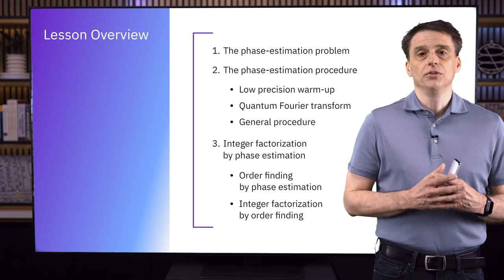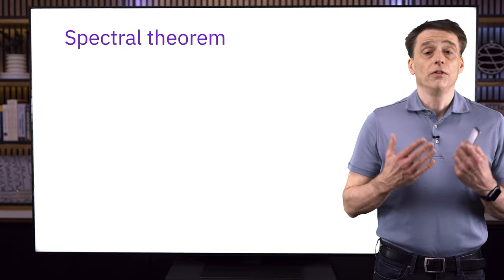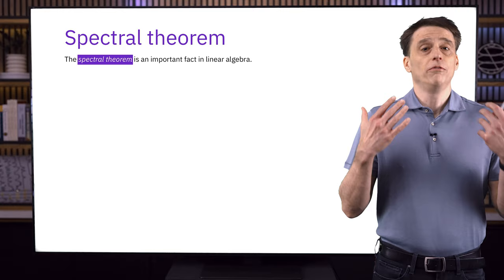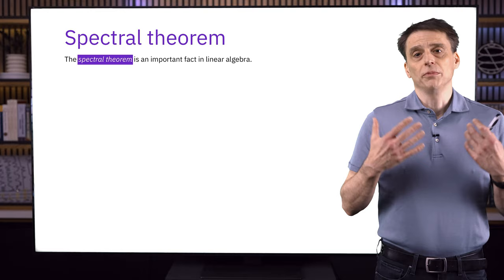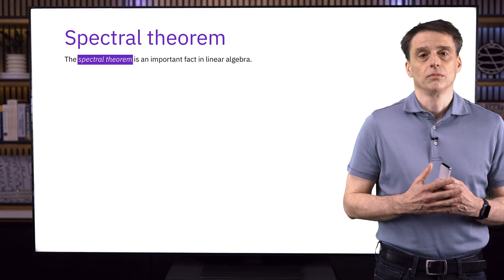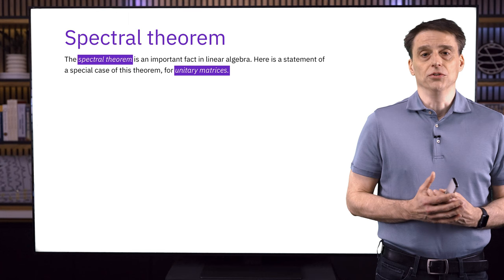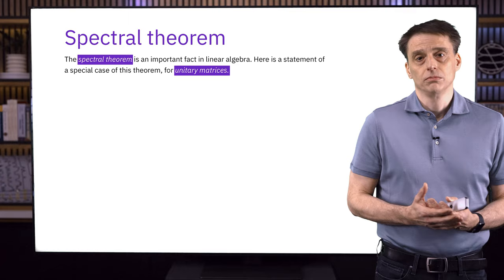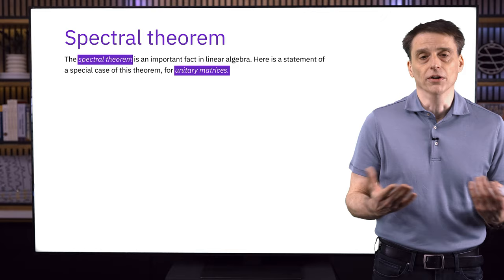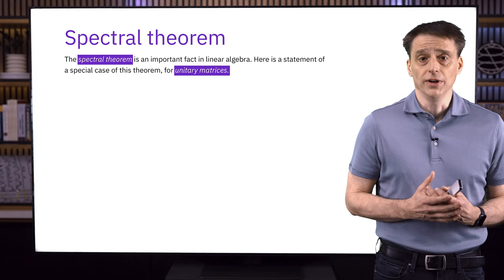We're going to begin with a special case of a theorem called the spectral theorem, focusing on what it tells us for unitary matrices. The spectral theorem is a very important theorem from linear algebra and functional analysis. It tells us something interesting about how certain linear mappings can be expressed in a spectral decomposition. We'll restrict our attention to unitary matrices, which are a special case of the broader class of normal matrices for which the theorem holds.